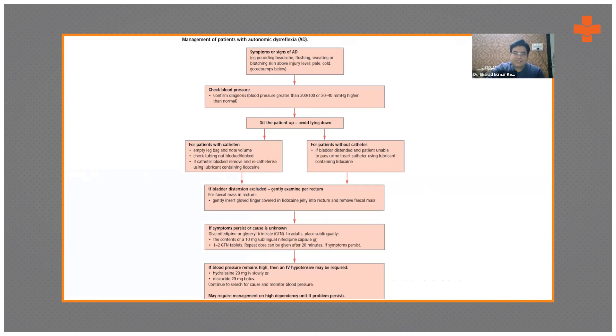So how do you manage such patients? You first notice the signs and symptoms of autonomic dysreflexia. In fact, it is said that anything about 20 to 40 mm higher than the baseline—the spinal cord injury patients already have a normal baseline which is less than the normal, that is 140 by 80, which is the normal in usual patients.